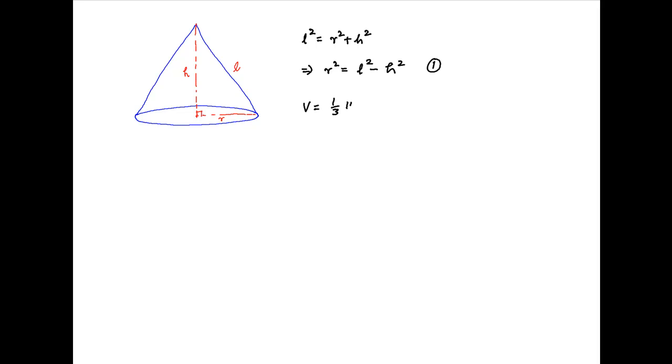Now the volume V of the cone is equal to 1/3 πR²H. Substituting the value of R² obtained above, this equals πH/3 times (L² - H²), which can be written as π/3(L²H - H³).